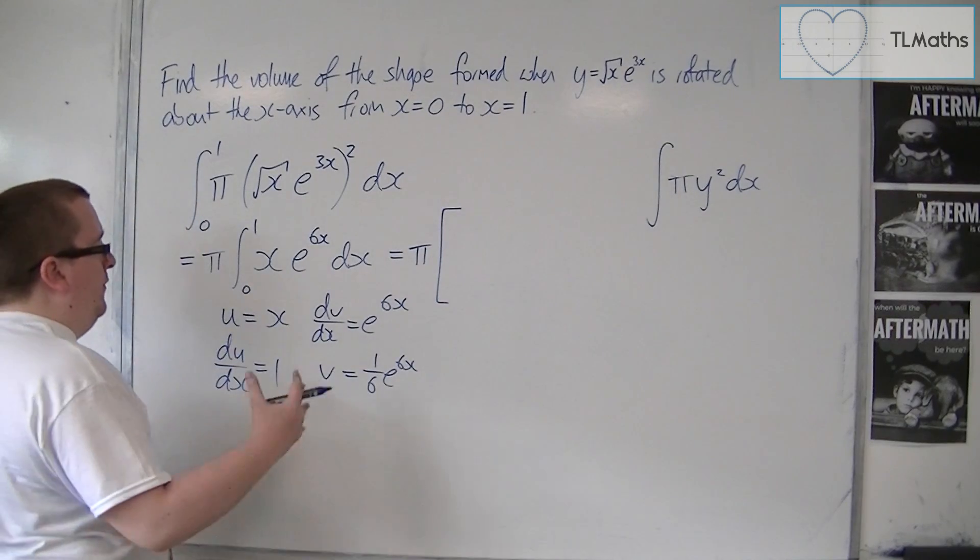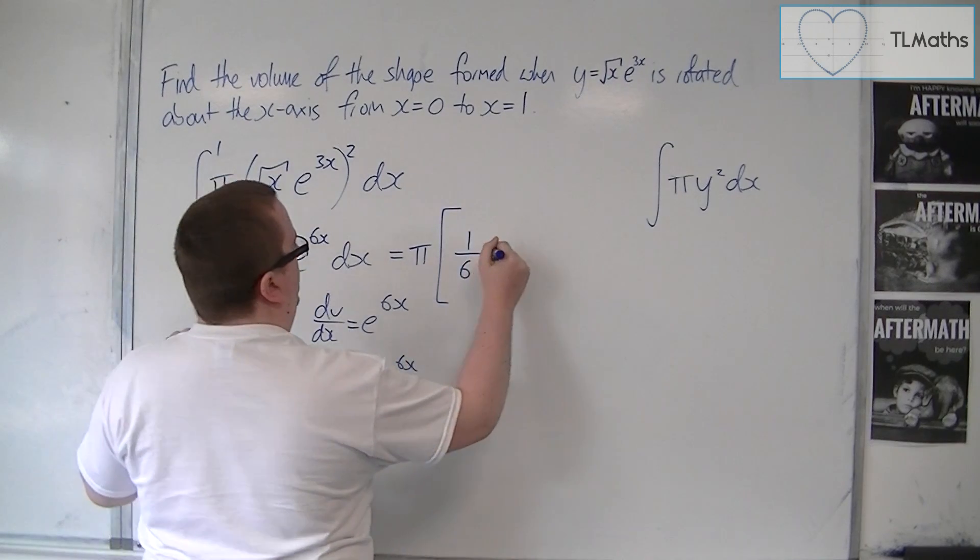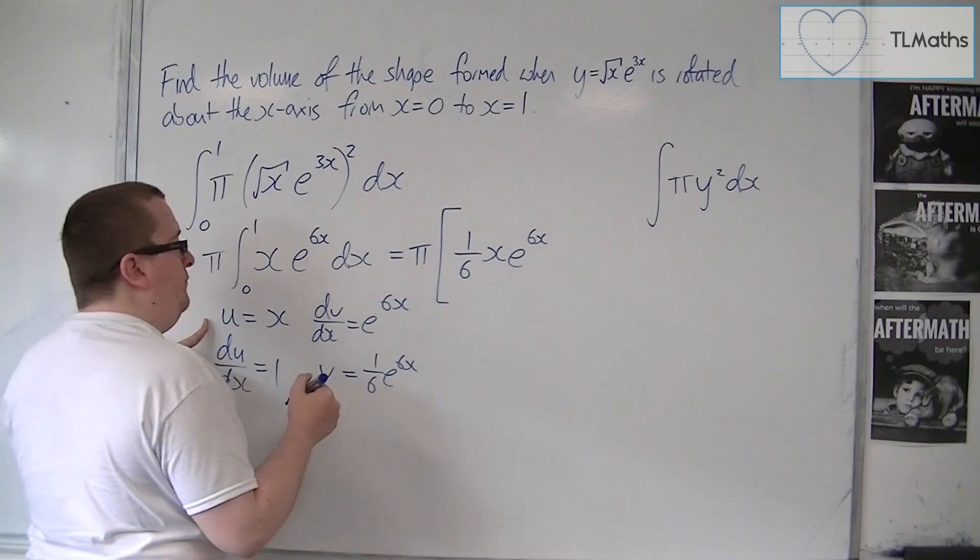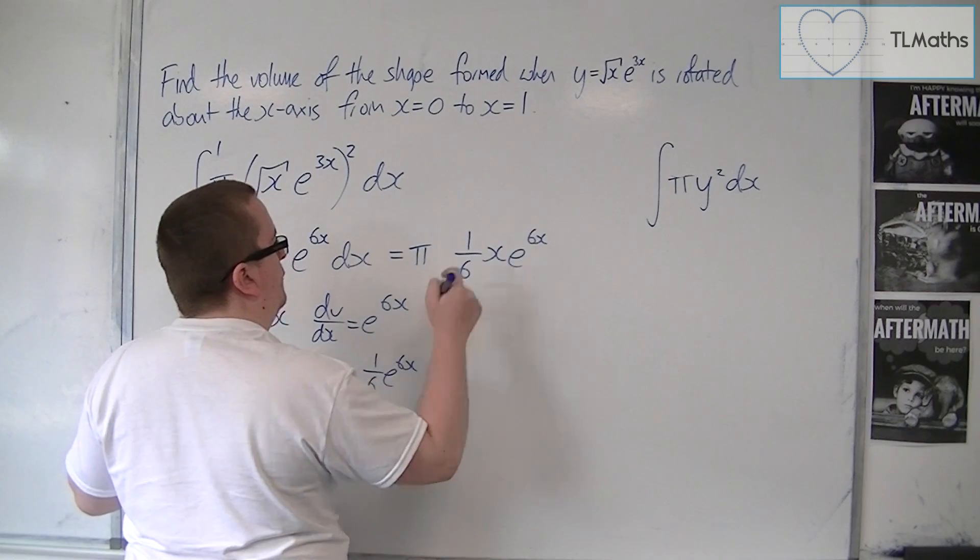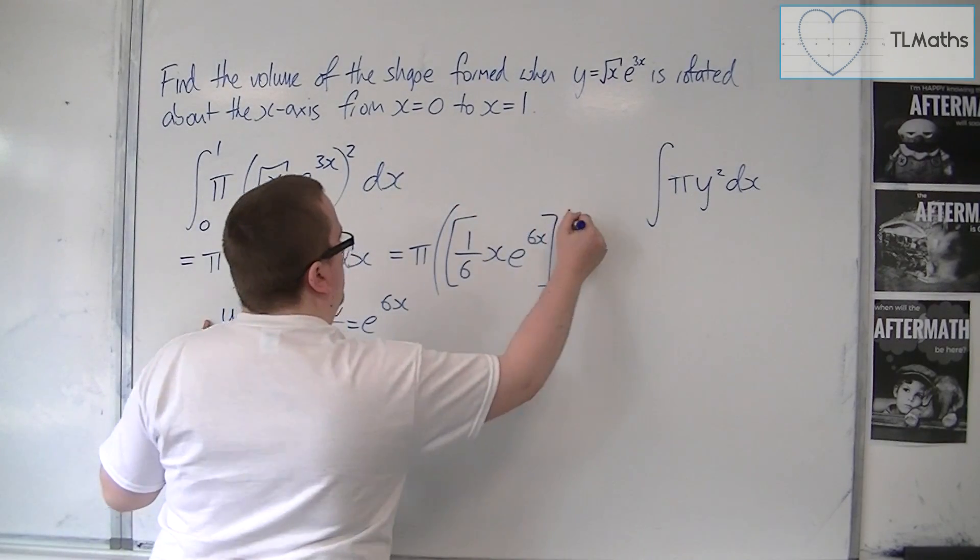u times v, so 1 sixth x e to the 6x. Well, let's have that as a curved bracket, and then we're evaluating that between 0 and 1.